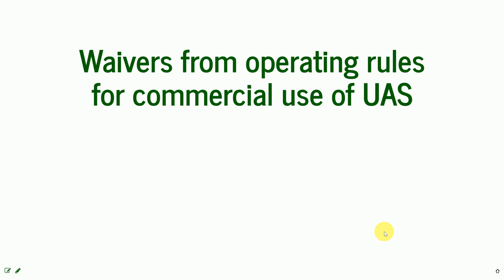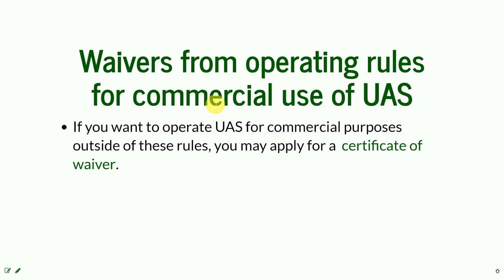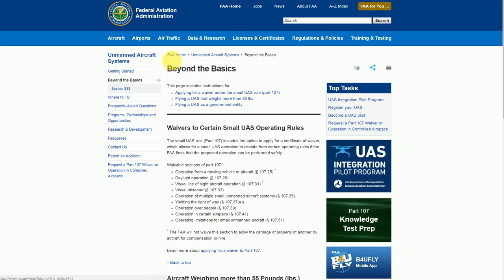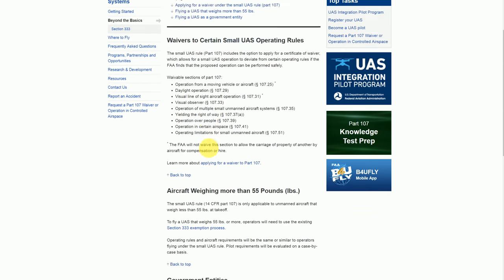These rules apply to all commercial users, but some businesses recognize that the rules will interfere with what they want to do with the UAS or with the data. The FAA found a way to control and check the safety of those operations, so some rules can be waived. If you want to operate outside of the rules, you may apply for a certificate of waiver. Under the linked FAA website you can find an explanation of how to obtain waivers, how to apply, and what sections of Part 107 are available.